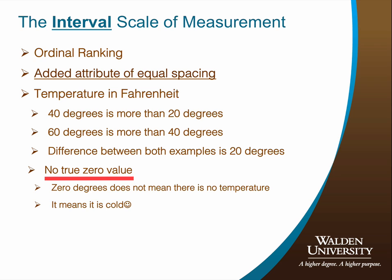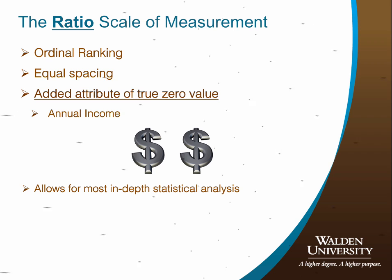Let's now address the last scale of measurement, the ratio scale. The ratio level differs from the interval level only in that it contains a true zero value. As such, the ratio scale of measurement can be expressed as ratios. For example, dollars expressed in US currency is an example of a ratio level variable. One making an annual income of 40,000 US dollars can be said to have an annual income twice that of someone making 20,000 US dollars. Moreover, it is possible to have an annual income of zero dollars. The ratio scale of measurement provides the most detailed information of the four levels of measurement and allows for the most complex research questions to be addressed.